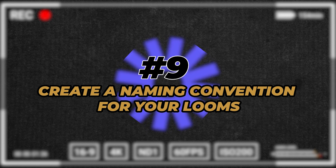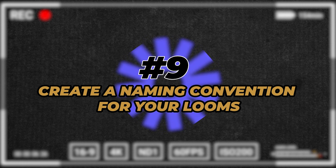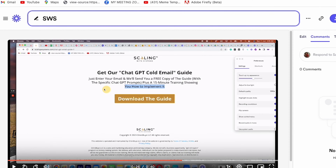Tip number nine is so important if you use Loom for business: please take an extra two or three seconds to use a proper naming convention. I can't tell you how many times in the past I've created the same Loom video over and over again because after I was done shooting it, I didn't rename it, making it almost impossible to find that video in my history. Now, every single time I shoot a Loom video — whether or not I think I'll use it again — I follow a specific naming convention that lets me search for and find it in the future.